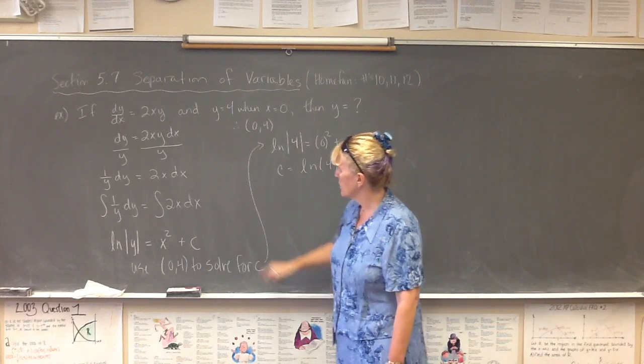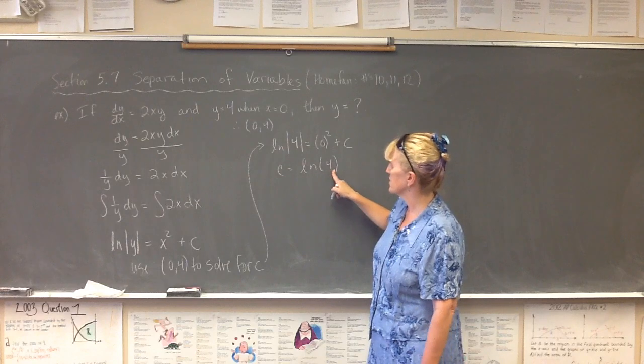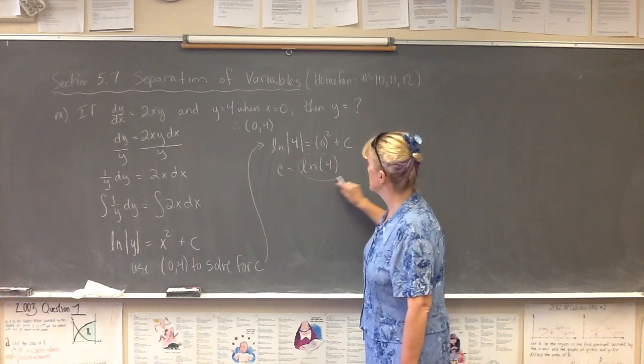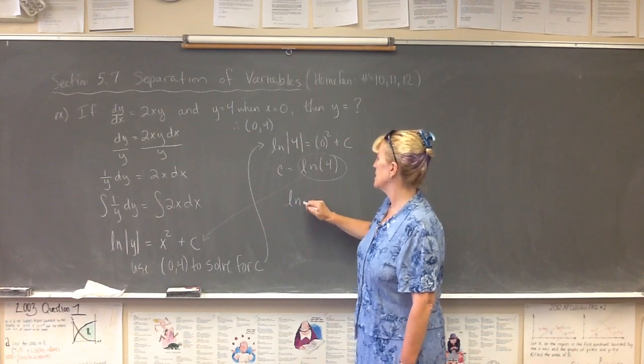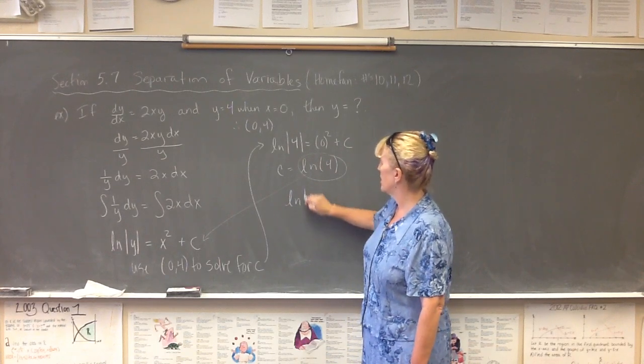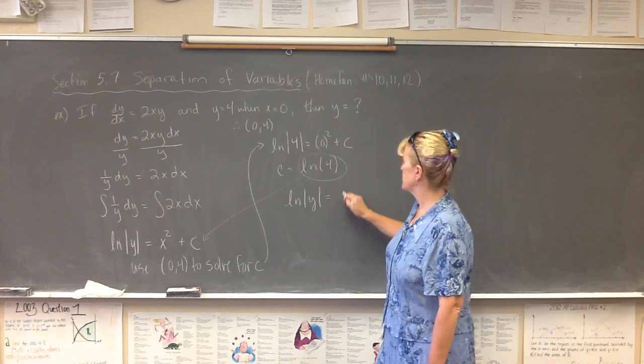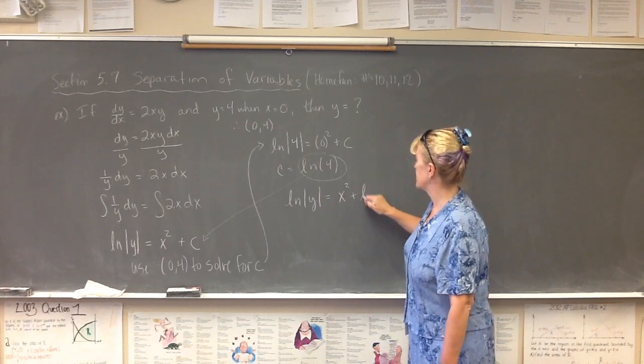And now we go ahead and we bring this back into play, and we put our c back where it belongs, way over here, and we write natural log of the absolute value of y is equal to x squared plus natural log of 4.